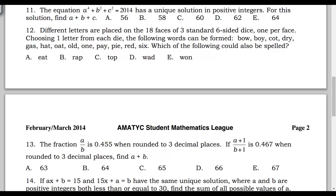Question 11 says: the equation a to the fourth plus b squared plus c squared equals 2014 has a unique solution in positive integers. For this solution, find a, b, c. We have to add a plus b plus c when we're done to verify we have the right numbers.